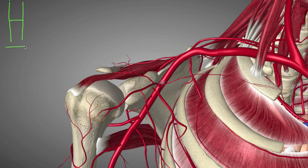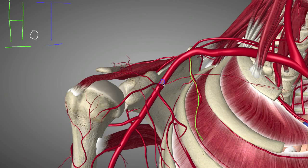H in HOTEL stands for Highest Thoracic Artery, which is right there. O doesn't stand for anything. The T stands for Thoracocromial Trunk Artery. You might have learned it as Thoracocromial Artery or Thoracocromial Trunk Artery — however you were taught, Thoracocromial Artery is fine, but make sure that's okay with your professors.